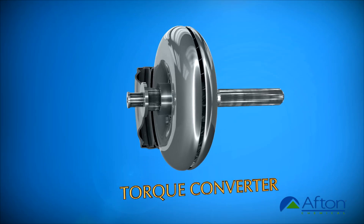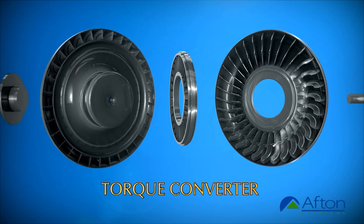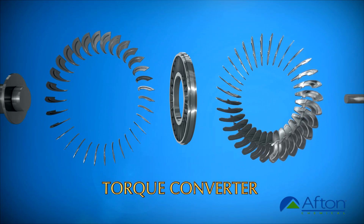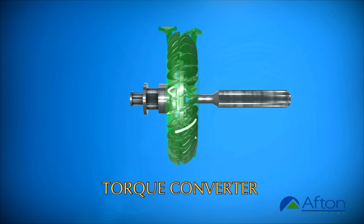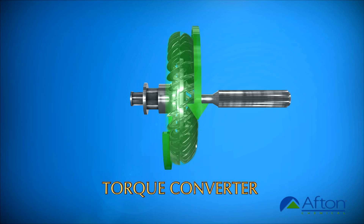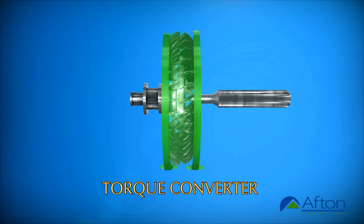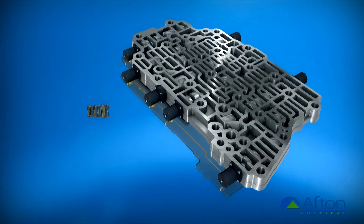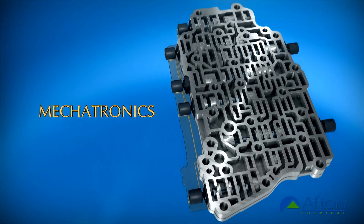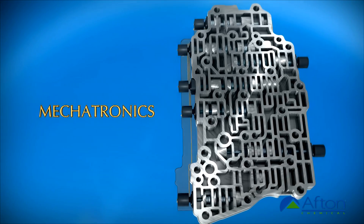The torque converter connects the transmission to the engine and multiplies the torque during initial acceleration. It uses two turbines which spin independently but are fluid coupled, allowing the engine to idle while the vehicle is stopped and produce smoother acceleration as it shifts through the gears. Finally, the mechatronics is the brain of the transmission — a complex system of ports, valves and electronics that control all transmission functions.